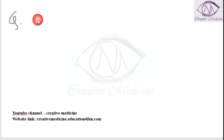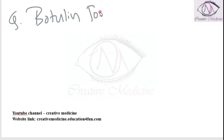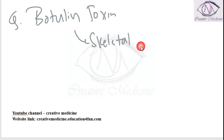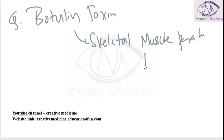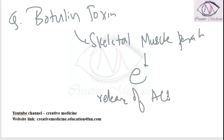Botulinum toxin produces skeletal muscle paralysis, and it produces this skeletal muscle paralysis mainly by inhibiting the release of acetylcholine.